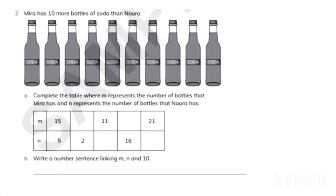M always has 10 more bottles than N. When M has 12, N has 2. When N has 1 bottle, M has 11 bottles. When M has 26 bottles, N has 16. M always has 10 more — that's the concept of this table.